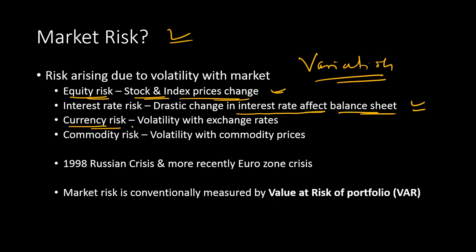Currency risk is associated with the volatility of exchange rates, which change every moment. Banks with international operations that trade in different currencies are particularly affected. If the dollar value goes down, people trading in dollars get affected. Commodity risk is related to the volatility of different commodity prices traded in the capital market.